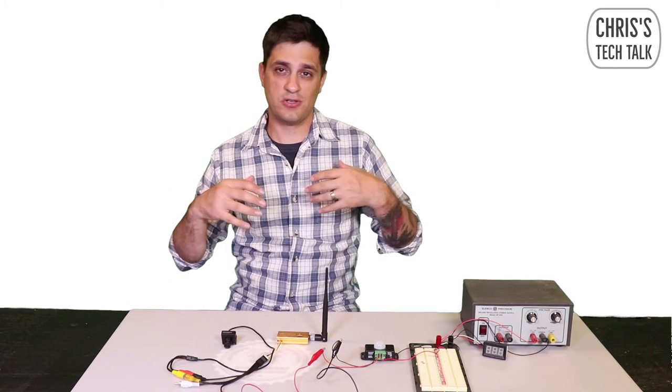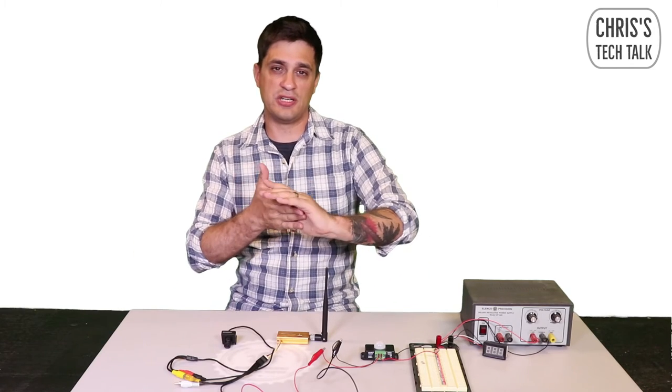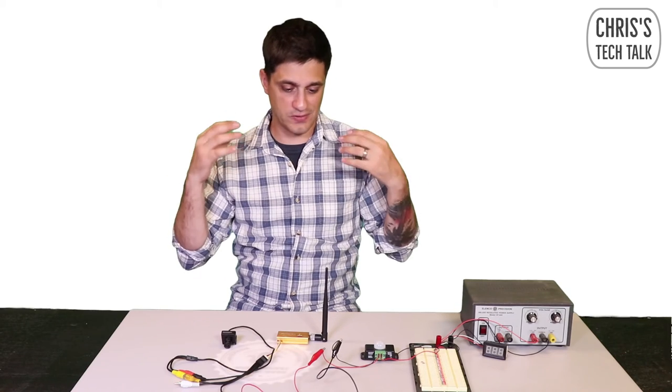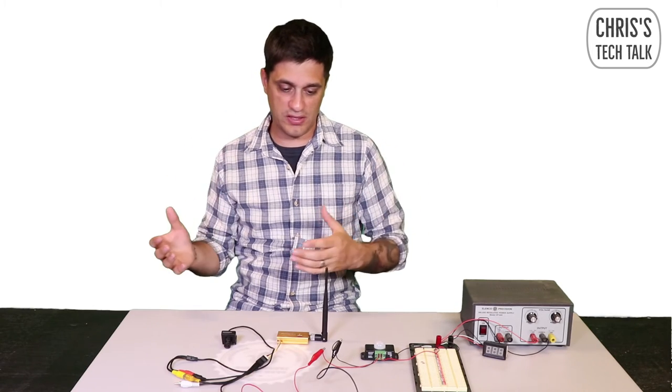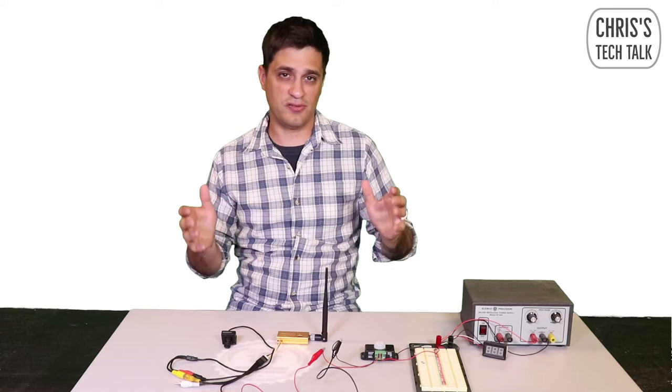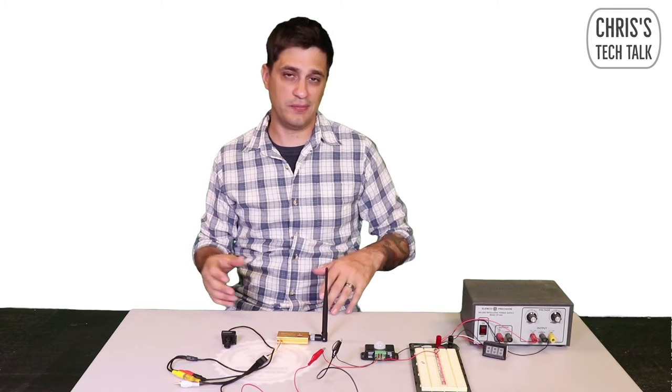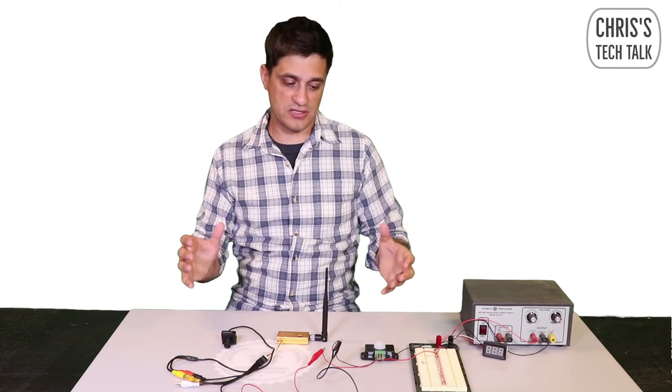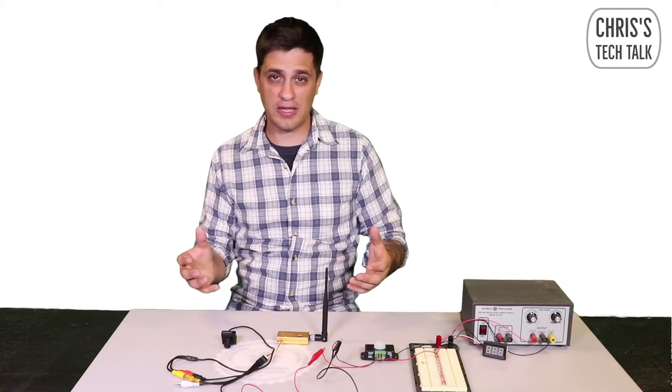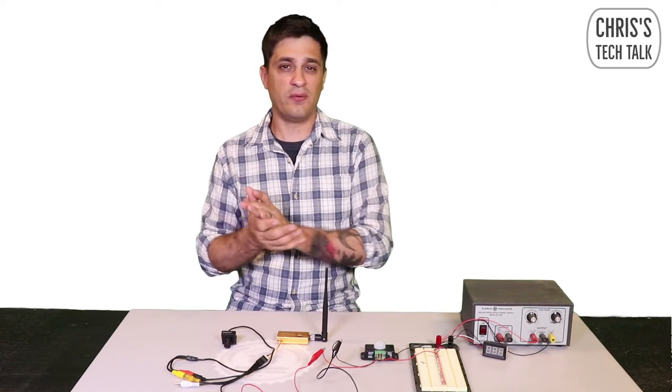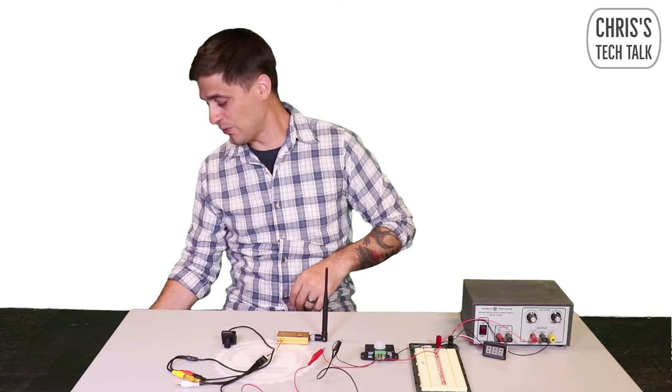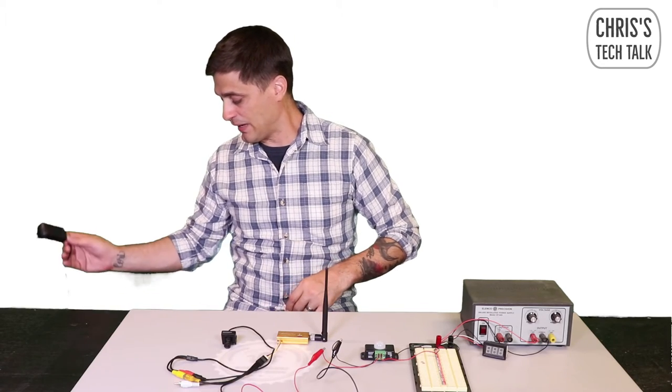At this point we have tested the relay, the camera, and the transmitter and we can see that it all works together. So now the next part of the equation is the power supply. If you're building one of these, the power supply is going to be kind of dependent on how you're using it. If you're using this something like a doorbell camera, you're going to want a constant power supply.